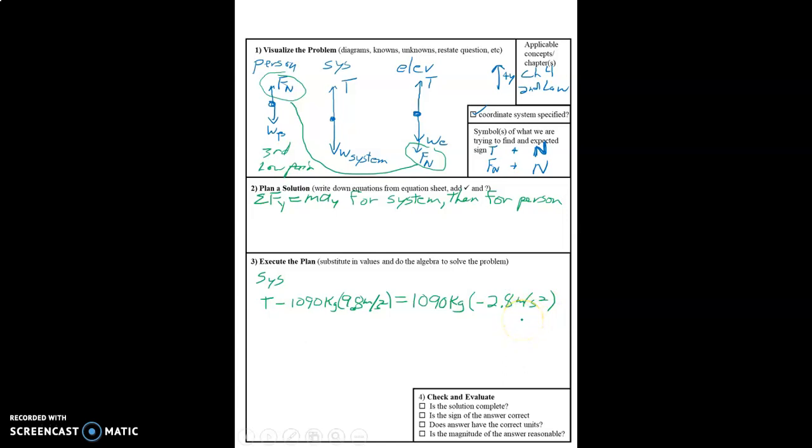We know it was a downward acceleration. And so that ends up being a negative number. And let's see, I should have put that up here somewhere. Up is positive, and it said it was downward. So now we can go ahead and calculate this.